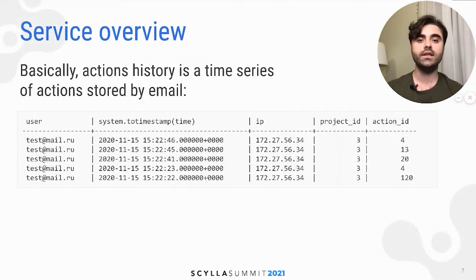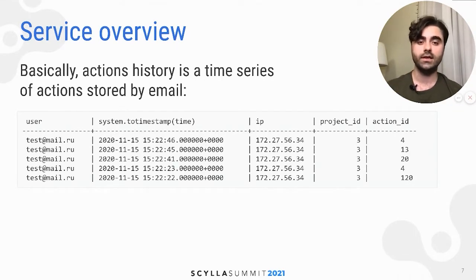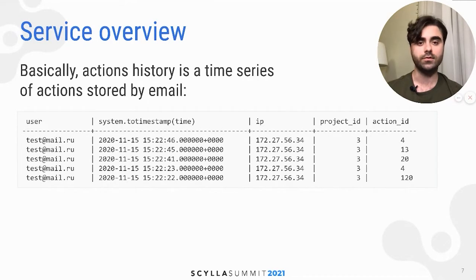Basically, actions history is a time series of actions stored by email, and every action has a user field (email in this case), a time field, an IP address from which the action was committed, a project ID which stands for the ID of the client who wrote the action, and also an action ID which stands for the ID of a particular action like checking for new messages or uploading a new photo into the cloud.